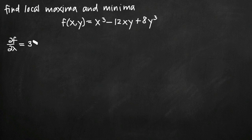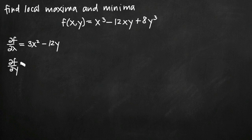x cubed gives us 3x squared. For negative 12xy, when we take the partial derivative with respect to x, negative 12y acts as a coefficient, so we're left with negative 12y since the derivative of x is 1. The 8y cubed term drops away because there's no x variable. For the partial derivative of f with respect to y, x cubed drops away, the middle term gives negative 12x, and the derivative of 8y cubed gives plus 24y squared.